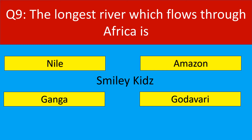Question number 9. The longest river which flows through Africa is. Options are: Nile, Amazon, Ganga, Godavari.